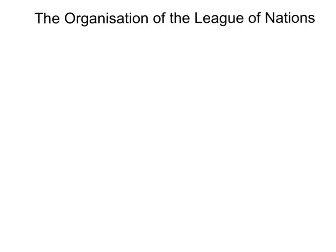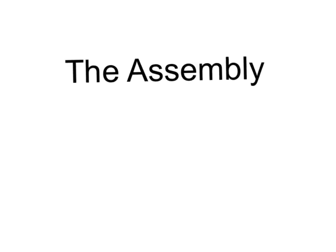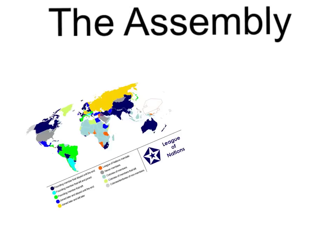The organisation of the League of Nations: the Assembly. Each of the member states on this map were represented in the Assembly. It met once every year and discussed broad topics, things that were quite general, such as what to do with any new treaties, any new members that come in — quite general things.